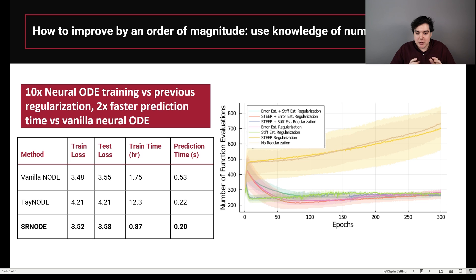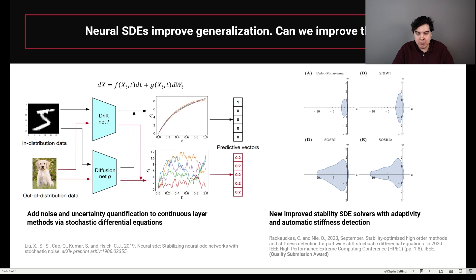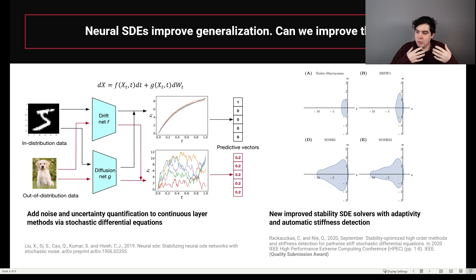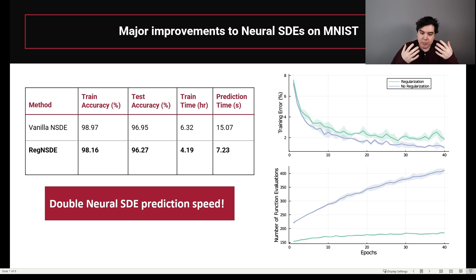Does this generalize? We also show that you can take the same idea to neural SDEs. Neural SDEs have been shown to be a nice way to incorporate some randomness into distributions when generating images. We recently showed in a 2020 paper that you can make new SDE solvers with very high stability regions, error estimates, and estimates for stiffness. Taking these new SDE solvers and using these error estimates as regularization in a neural SDE training process gives you the same property: a neural SDE which predicts and trains almost as well as the original vanilla version, but trains a lot faster and predicts twice as fast.